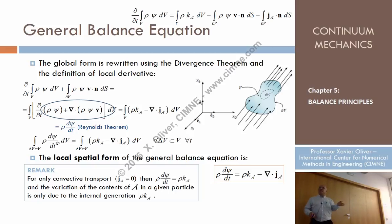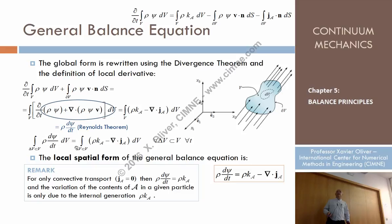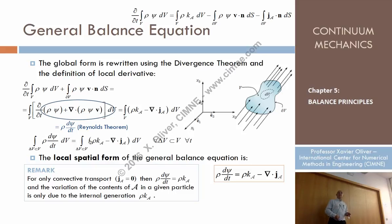So finally, after analytical rearrangement, the expression of the balance of the property inside the fixed domain dV can be expressed as two volume integrals. This must hold whether the volume is arbitrary or even a part of the integral domain. This again allows applying the localization principle: what holds at the integral level also holds pointwise for every point of the domain. That is the local form of the general balance principle.